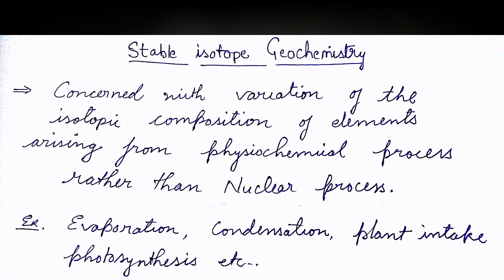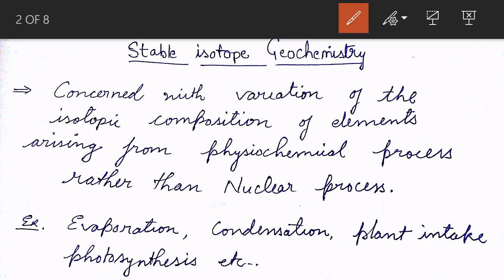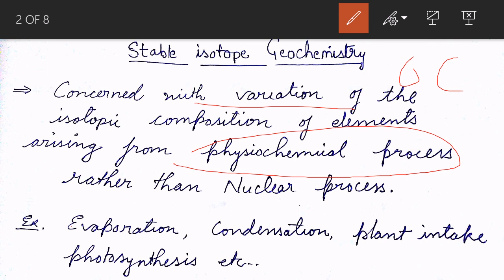In stable isotope geochemistry, we understand variation in isotopic concentration or composition. In the case of unstable isotopes like uranium and strontium, variations come from nuclear activity. But in the case of stable isotopes like oxygen and carbon, the variations occur because of changes through physiochemical processes.